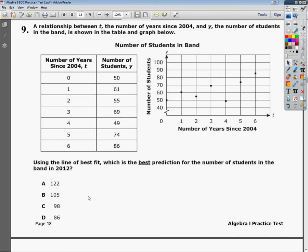Alright, this is the Algebra 1 end of course practice test number 2, question number 9. A relationship between T, the number of years since 2004, and the number of students in the band is shown in the table and graph below.